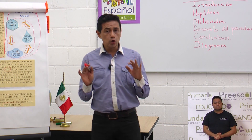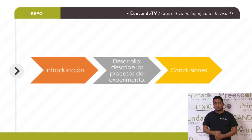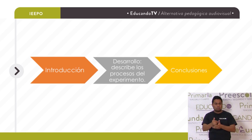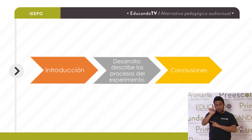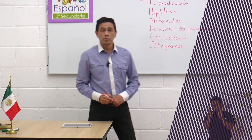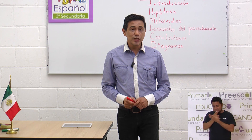Yo les traje otro ejemplo para ver en la siguiente imagen. Estamos viendo otro diagrama, también de procedimientos, solo que difiere en las líneas: es de abajo hacia arriba. Hasta abajo dice introducción, el del medio dice desarrollo y hasta arriba dice conclusiones. Pues entonces ustedes ya saben cuáles son los diagramas que podrían incluir en sus informes científicos.